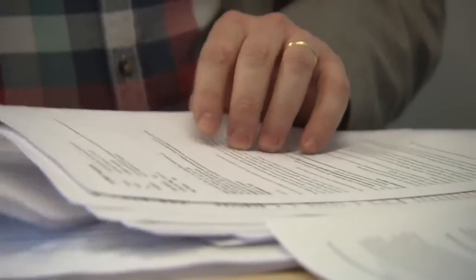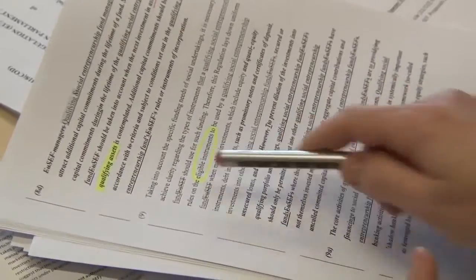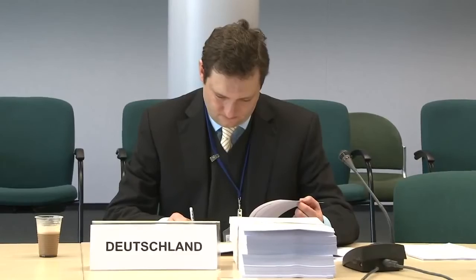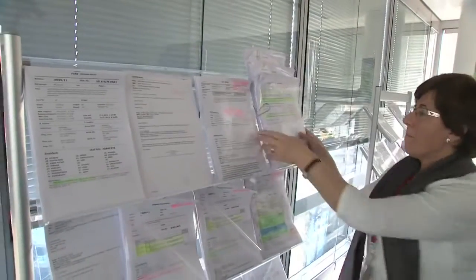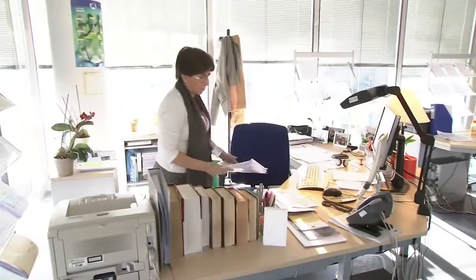There is a team of four lawyers per linguistic section, and there are currently 23 different languages, so there's a large team of lawyer-linguists. We're formally involved as from the political agreement. The way it works is the administrator gets in touch with the DQL coordination secretariat, who sets up a team of lawyer-linguists to work on a file.